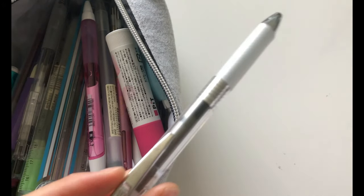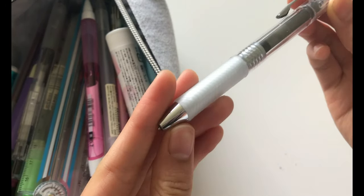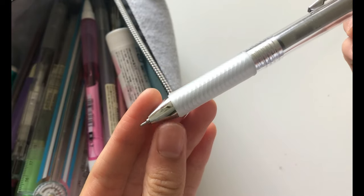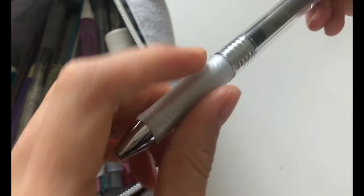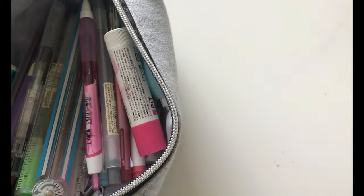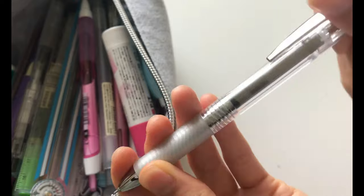The next item is the Pentel Energel In Free. So this one actually has the Energel ink in it and I use this usually when I'm going to highlight something because the Muji pen tends to smudge quite a lot.